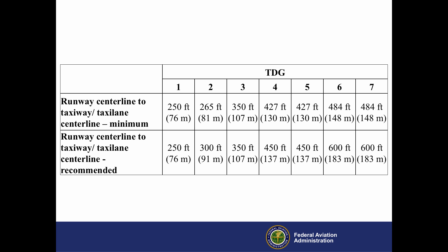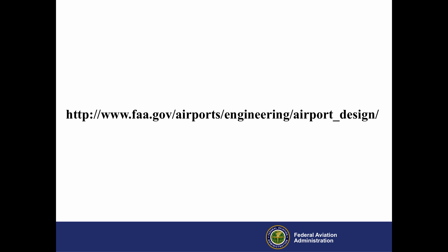Runway centerline to taxiway centerline separation distances must never be less than airspace requirements. In addition to consulting the AC, check for separation distances based on airspace requirements for visibility minimums, the aircraft approach category, and the ADG. The FAA Airports website, www.faa.gov/airports/engineering/airport_design, contains exit taxiway drawings designed according to the tables in the AC, including exits for typical combinations of TDG and runway centerline to taxiway centerline distances. They are in DXF format, which can be imported by most computer-aided design software.